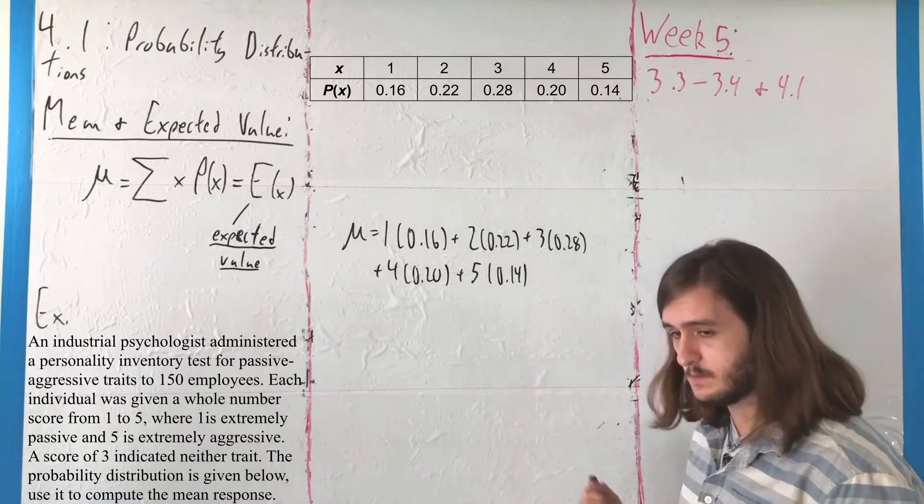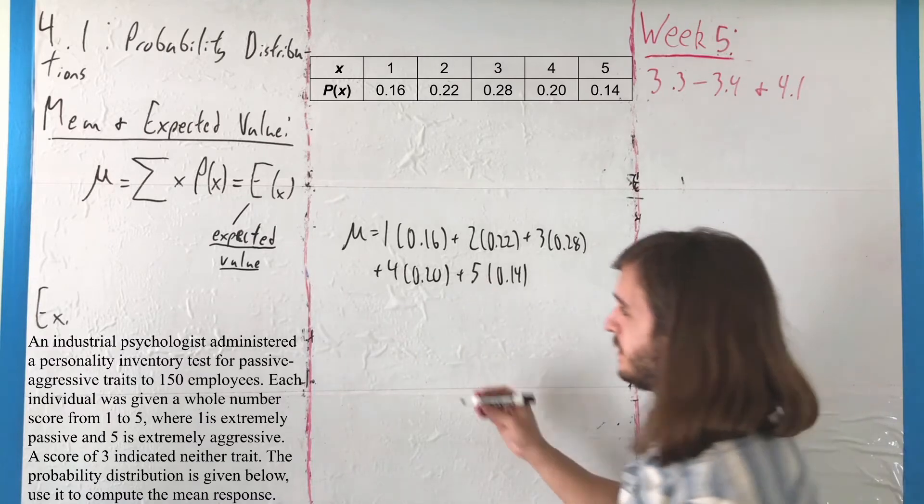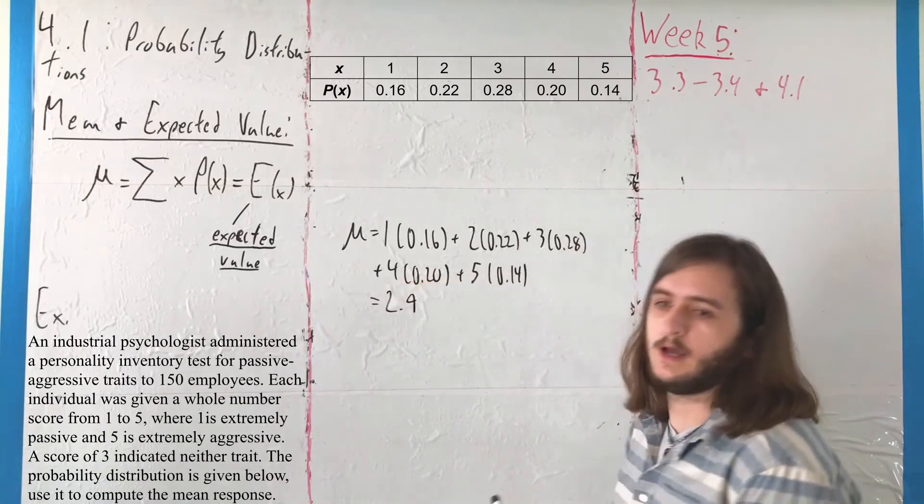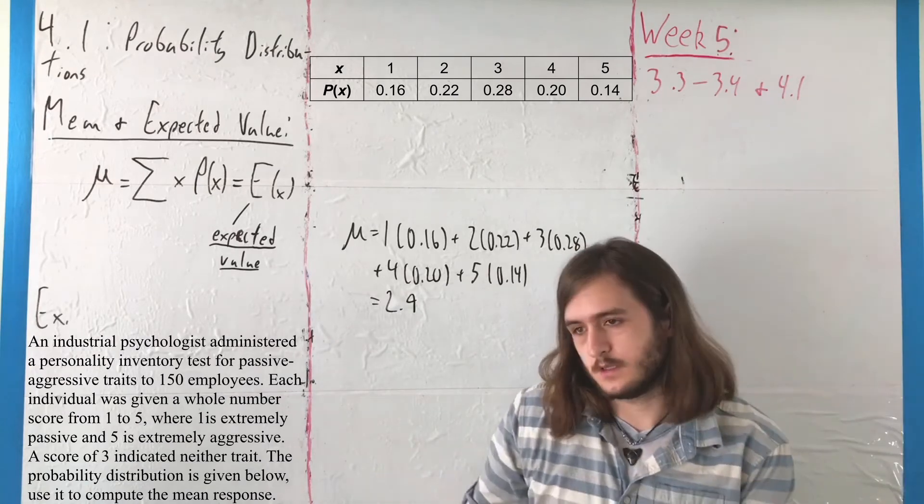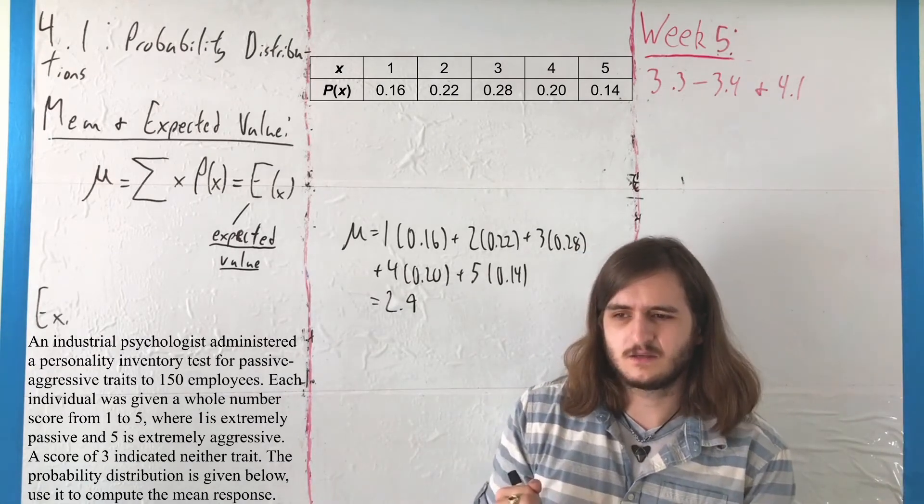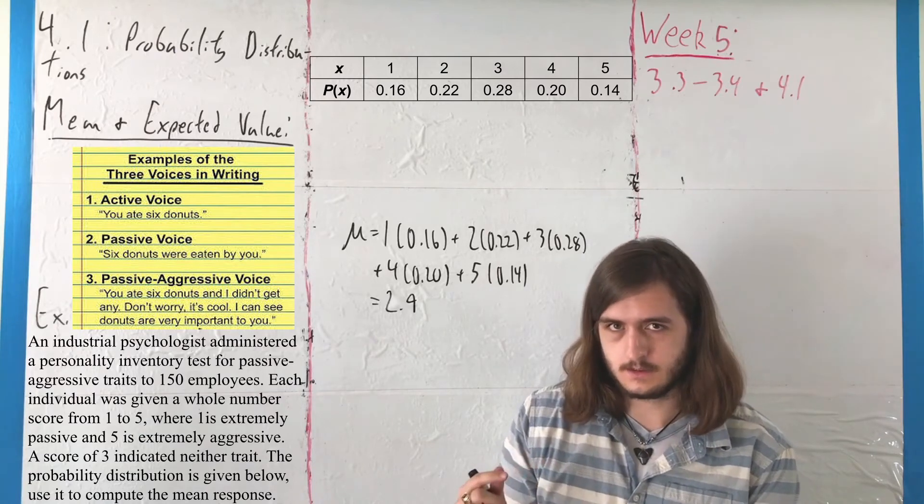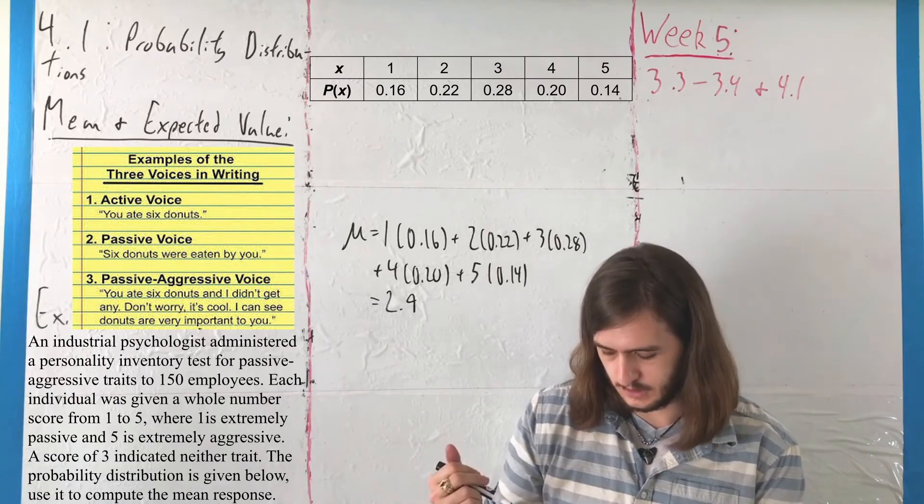We take these, multiply them out, add them up, and we get a mean of 2.9. That is, the average person, at least from the study, is a little bit more passive than aggressive, but not especially so.